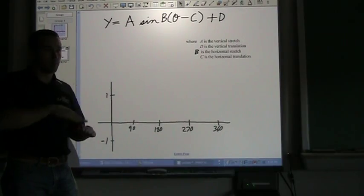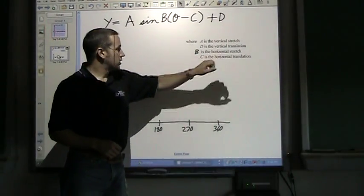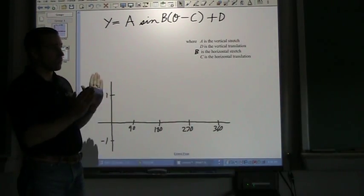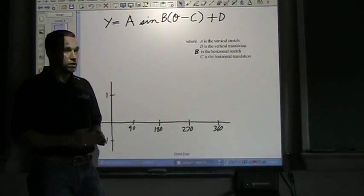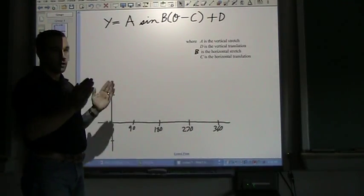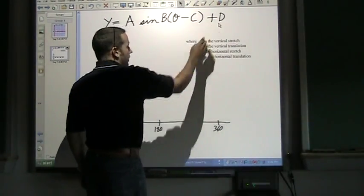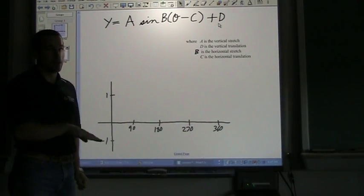Where A is the vertical stretch—remember vertical means up or down, so how far is it stretched up and down. B is the horizontal stretch, so how far is it stretched side to side. C is the horizontal translation, so how far has it gone left or right.